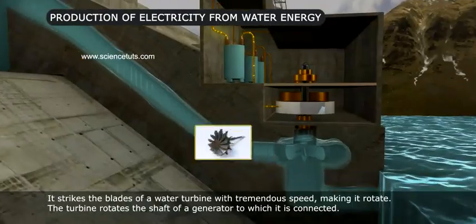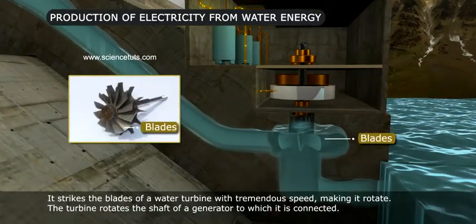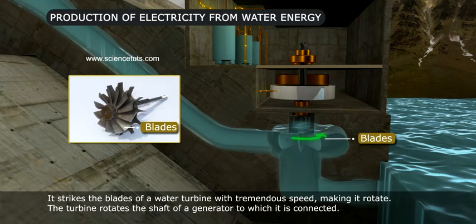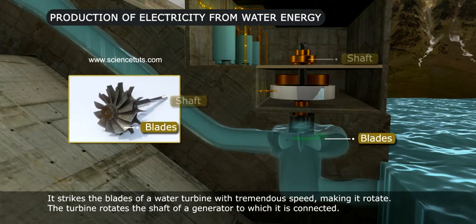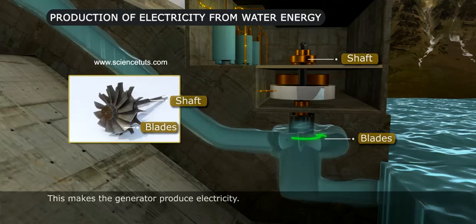It strikes the blades of a water turbine with tremendous speed, making it rotate. The turbine rotates the shaft of a generator to which it is connected. This makes the generator produce electricity.